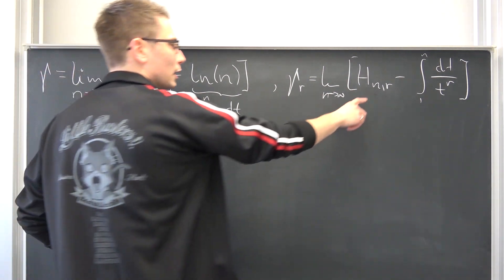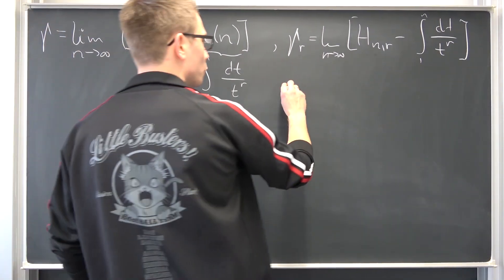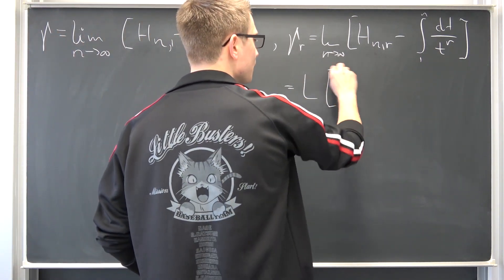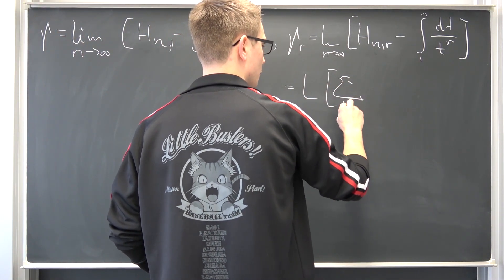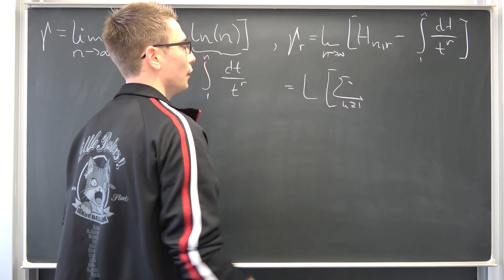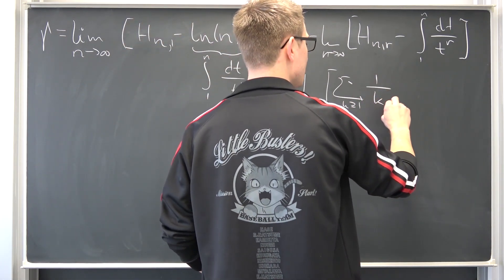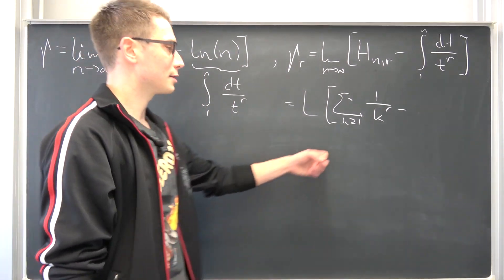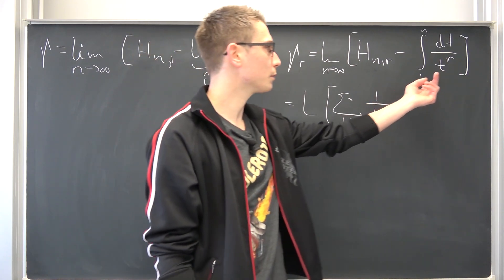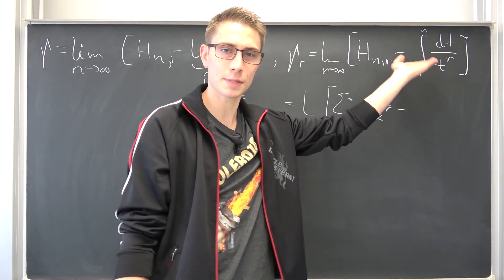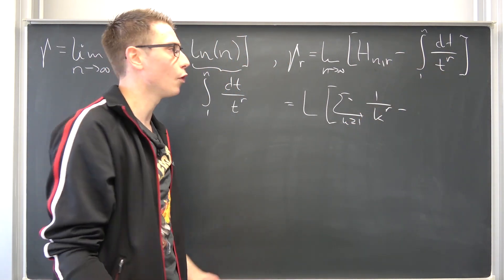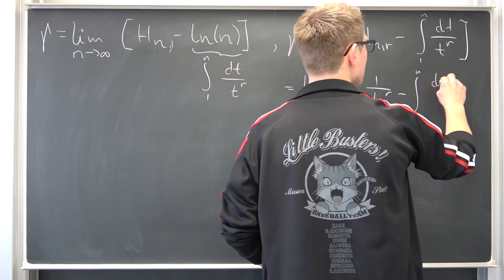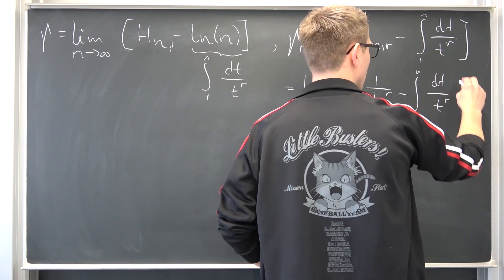What are generalized harmonic numbers? This is the limit as N approaches infinity, with k being greater or equal to 1 of 1 over k to the R-th power. Our sum is basically just an approximate integral, and we have the same sum and integrand. So overall, there's a deep connection between those two. The integral runs from 1 to n of dt over t to the R-th power.